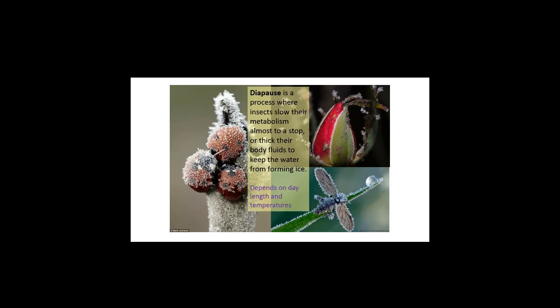So diapause is a process where the insects slow their metabolism, and at the same time they can produce some body fluids that avoid water crystallizing in the cells. That's a process that depends on the day length and also on the temperature. This process starts during the cold and it requires some acclimatization. And what's happening now is that we were having high temperatures most of the winter, temperatures above 50 degrees most of the time. So the aphids were active.